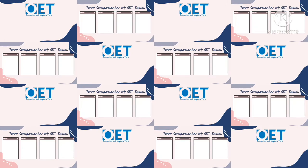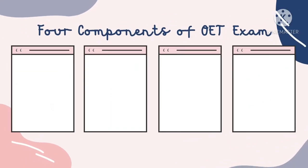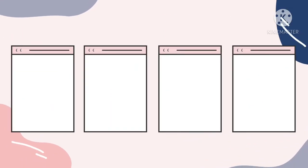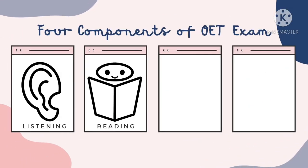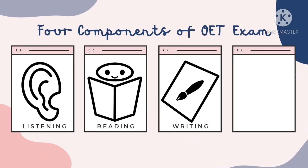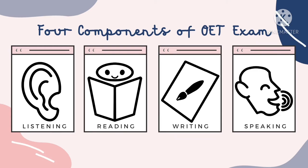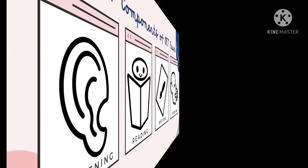OET assesses your skills in four key areas: listening, reading, writing, and speaking. Since it is designed specifically for healthcare professionals, the exam structure revolves around various healthcare settings. Let's discuss this one by one.